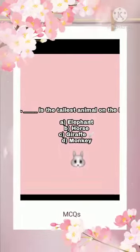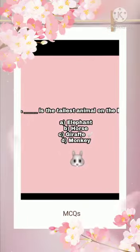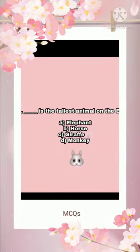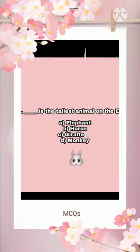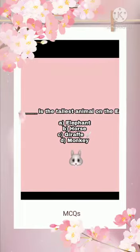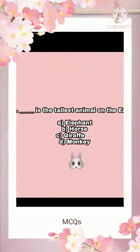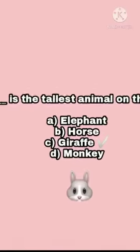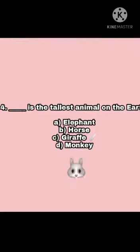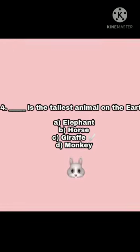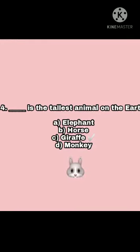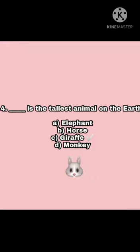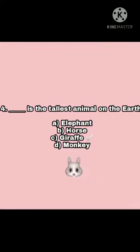Question four: Dash is the tallest animal on the earth — elephant, horse, giraffe, or monkey? The correct option is giraffe. Giraffe is the tallest animal on the earth.